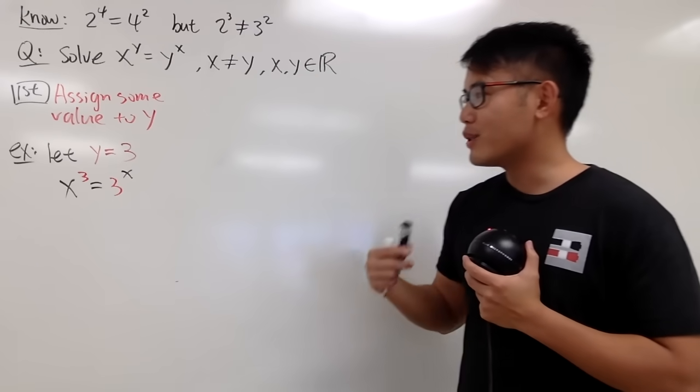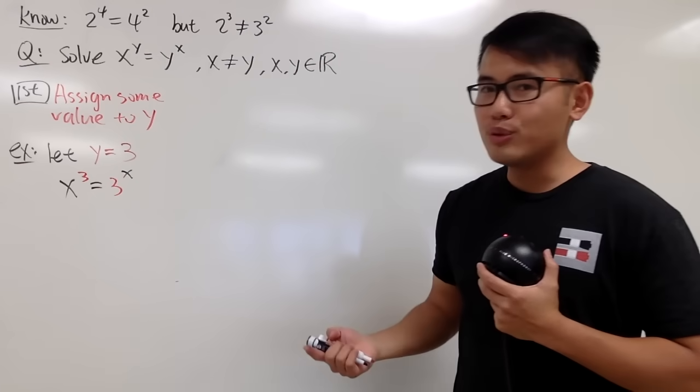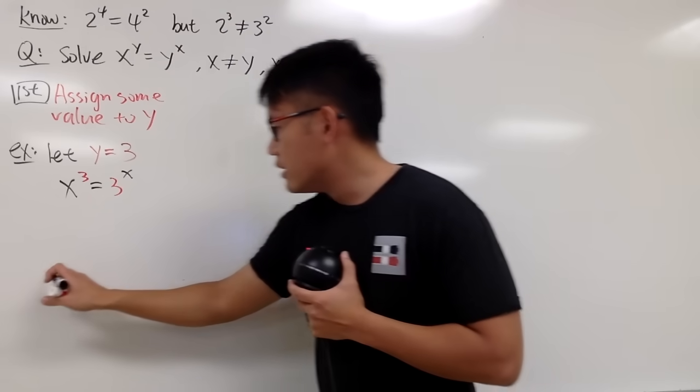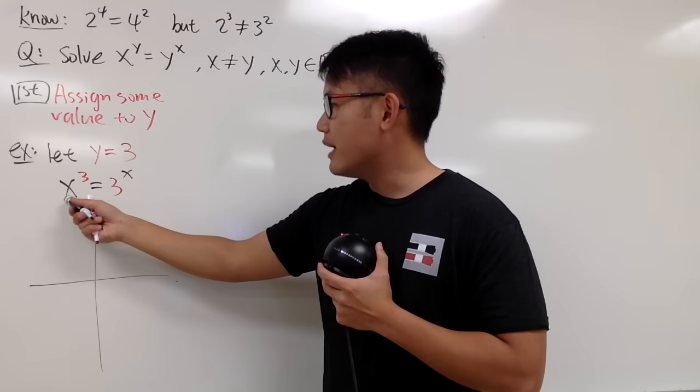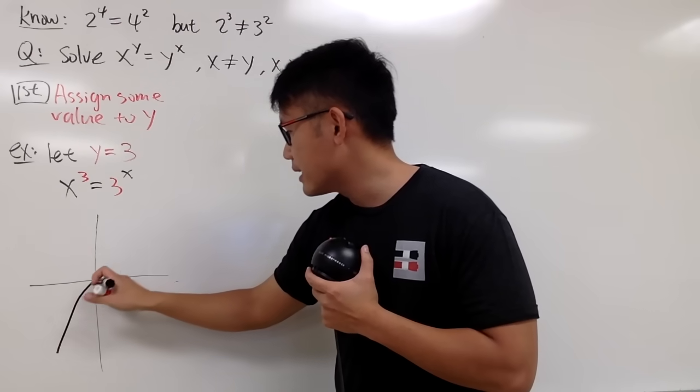How can we solve this right here? Unfortunately, I cannot do algebra to get a closed form for a nice answer, but what I can do is, I can just solve it by graphing to get approximation for the x. So, what I'm saying is that, let's go ahead, you can first graph x to the third power, and the graph for that looks like this.